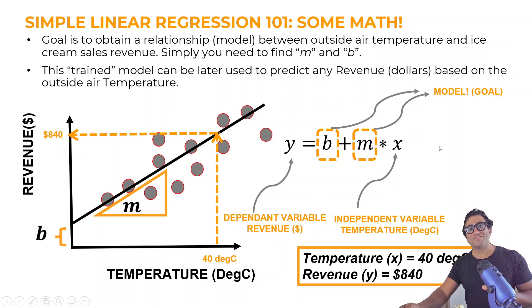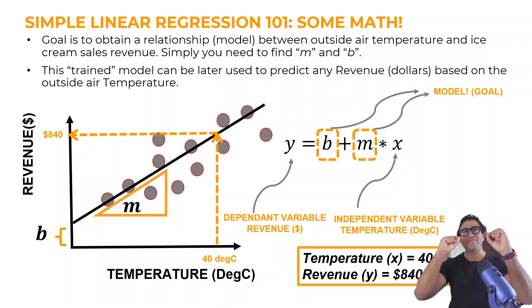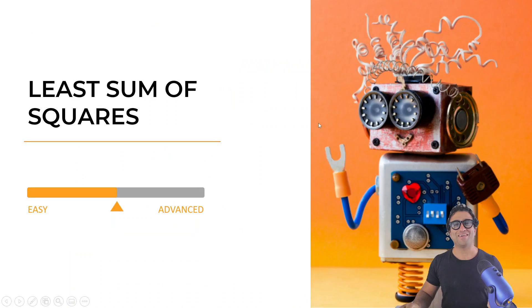All right. So as I mentioned, let's recap. The goal of our simple linear regression model is to try to find the optimal values for m and b. And once you have that trained model, then you can use it later on to predict any revenues in dollars based on the outside air temperature. So now you can get a y value based on the measured x value, which is my temperature value. All right. So that's it. That's simply all I have for this lesson.